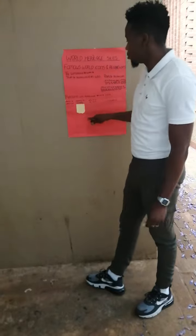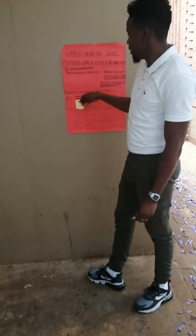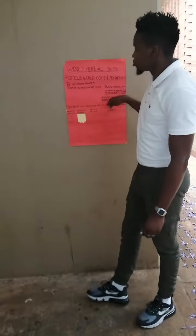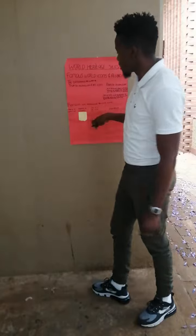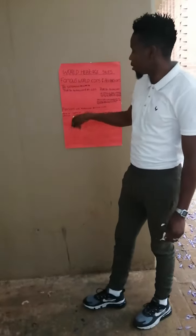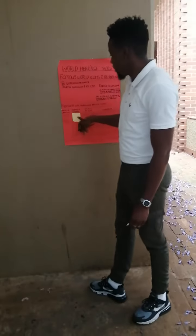Here we have a tabular example explaining why an attraction becomes an icon. On the table, we have the name of an icon, the name of a country, why it is an icon, and the description.